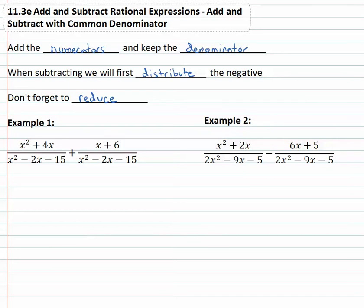So when we see x squared plus 4x over x squared minus 2x minus 15 adding x plus 6 over x squared minus 2x minus 15, we're really excited because we already have a common denominator. That makes this problem really easy, all we have to do is add the numerators and keep that common denominator. So we've got x squared in the numerator, combining like terms 4x plus x is 5x, and then finally there's this plus 6 over the common denominator of x squared minus 2x minus 15.